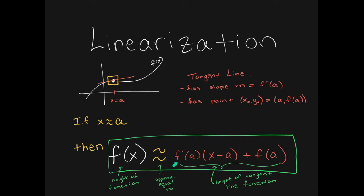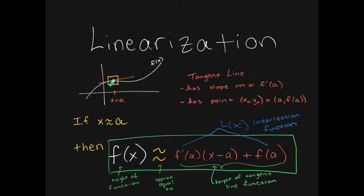The equation of the tangent line is the equation of a line. The m value, or the slope, is f prime of a, and our x-naught, y-naught is a comma f of a, which is our point on the line. This is what is referred to as linearization. The equation of the tangent line is also known as L of x, with L standing for linearization. As long as we're very close to x equals a, we can approximate the function by a linear function — we have linearized f of x using the tangent line.